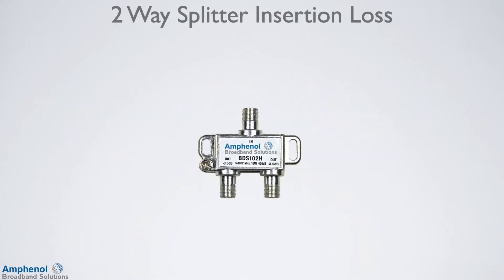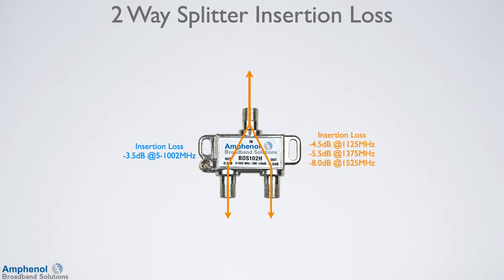Let's start with the insertion loss through 1 GHz two-way splitters. These splitters are rated up to 1 GHz, and the typical insertion loss is around 3.5 dB for standard cable TV frequencies — from the input to output, or from the output to the input. The MOCA frequencies range from 1125 MHz to 1675 MHz. Even though they're above the rated range of the splitters, they will still pass the MOCA frequencies, but at a higher loss.